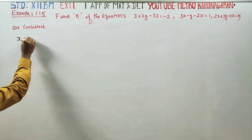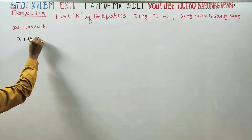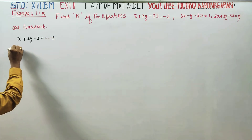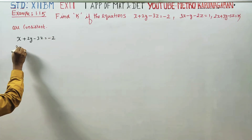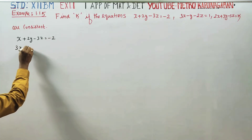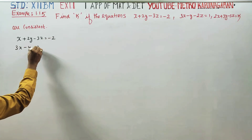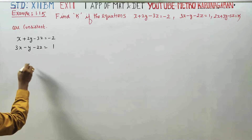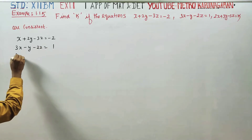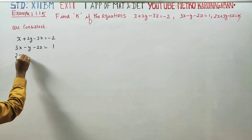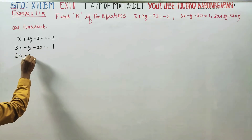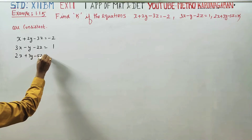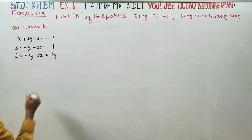The first equation is x plus 2y minus 3z equals minus 2. The second equation is 3x minus y minus 2z equals 1. The third equation is 2x plus 3y minus 5z equals k.